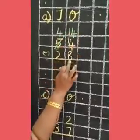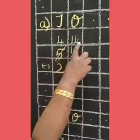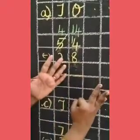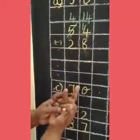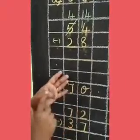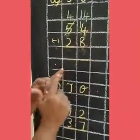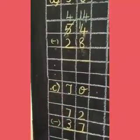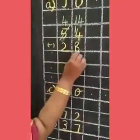14 minus 8. 14 in the mind, 8 in the finger. Before 14: 13, 12, 11, 10, 9, 8, 7, 6. So write 6 in the ones place.